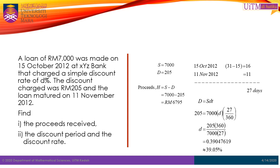Since we are using the banker's rule, the time period between the two dates must be calculated using exact time. As shown in the calculation, we found that the discount period is equal to 27 days.